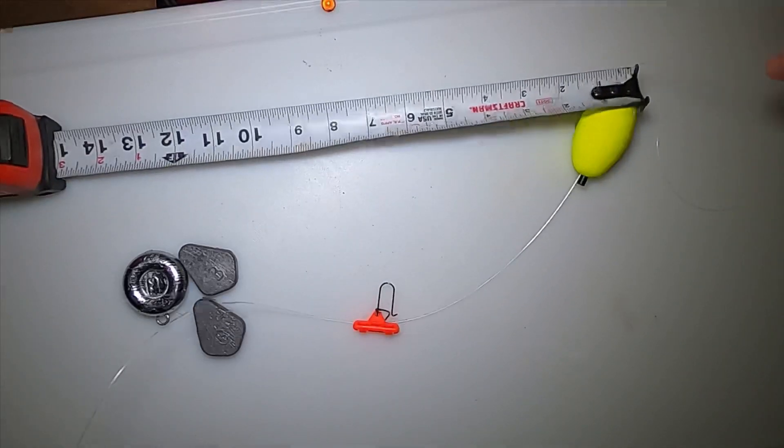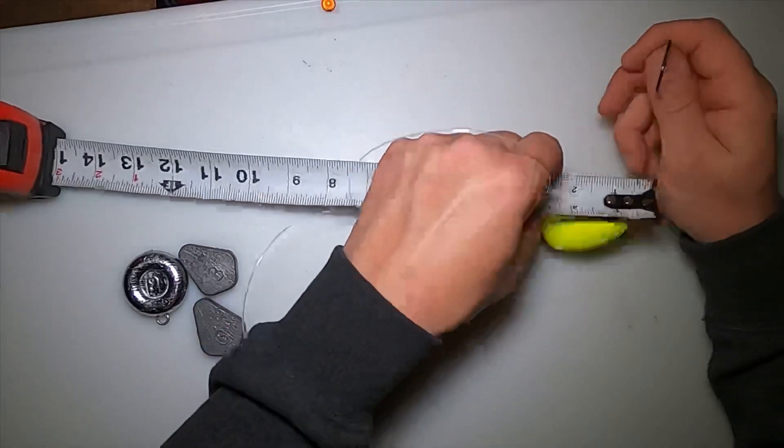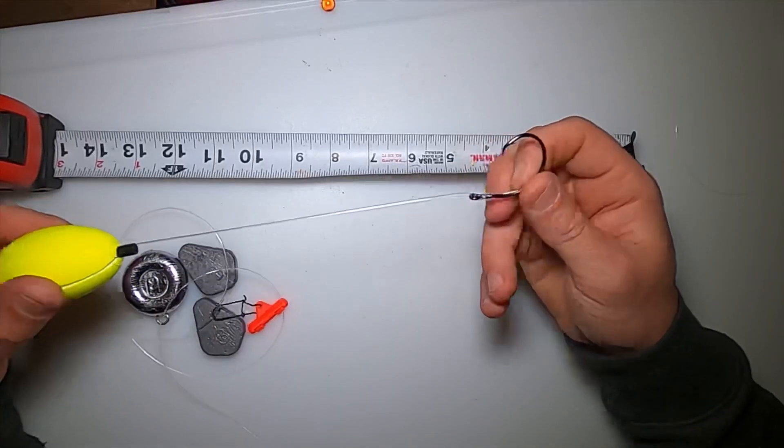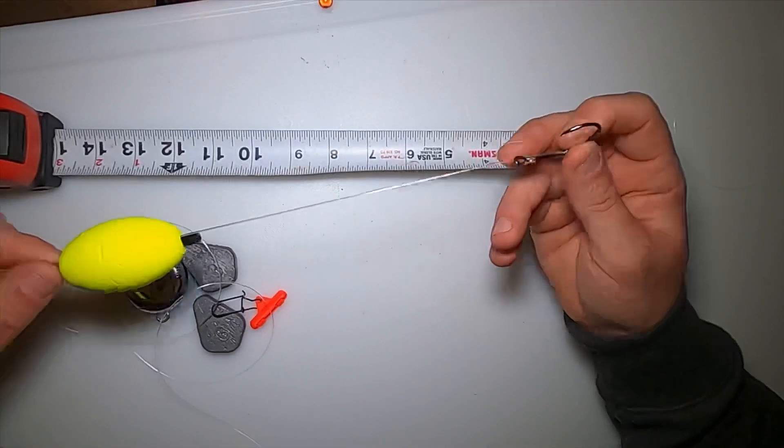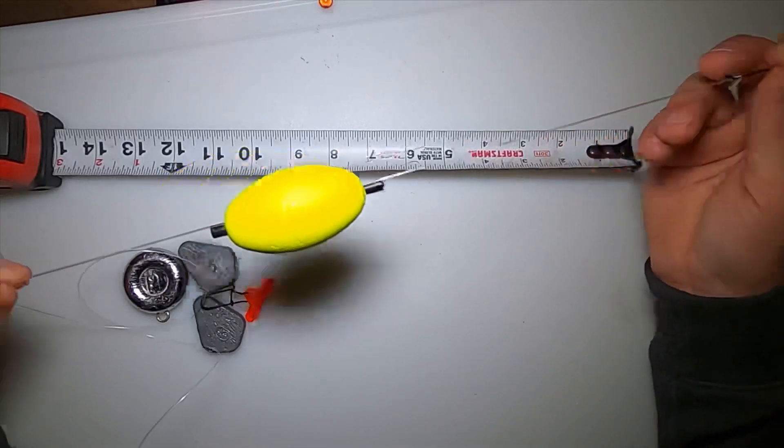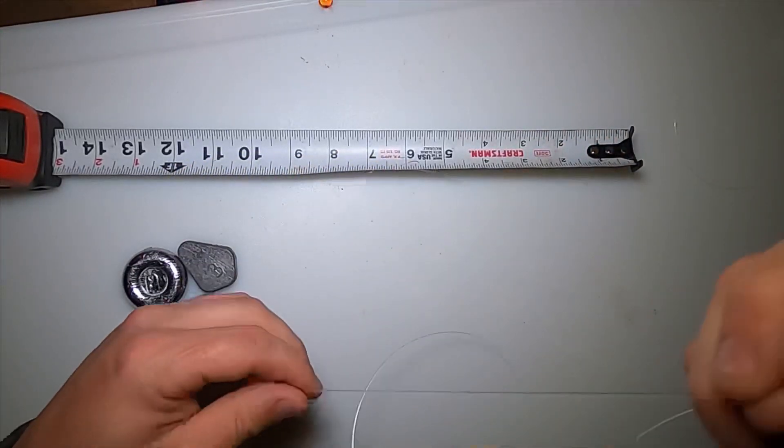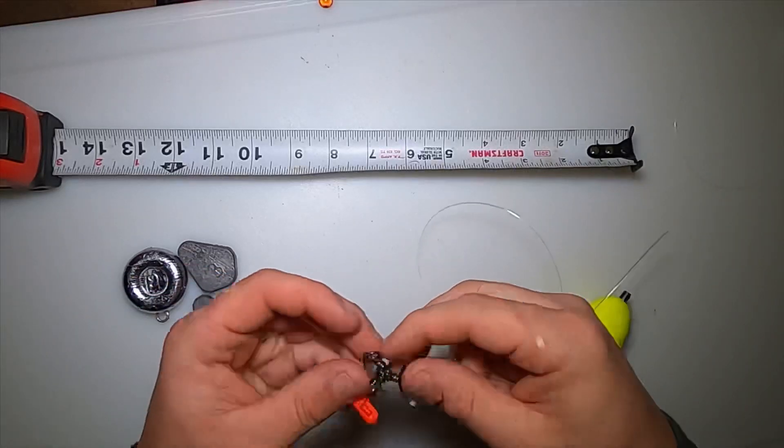So you got your leader attached to the 110-pound swivel, and you got about three feet long now. You got your Mustad Demon circle hook about six inches from your peg float.